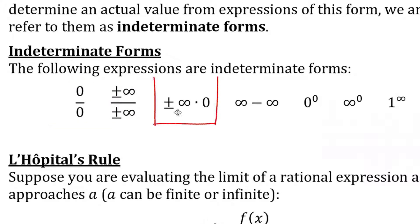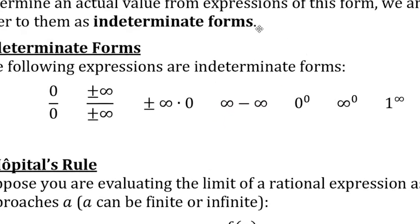Then in the next couple videos, we did what you do when you have a product: you take the reciprocal of one of them so you get zero over zero or infinity over infinity. And what you do for infinity minus infinity is you get a common denominator most of the time. Sometimes it involves multiplying by a conjugate, but usually just a common denominator.